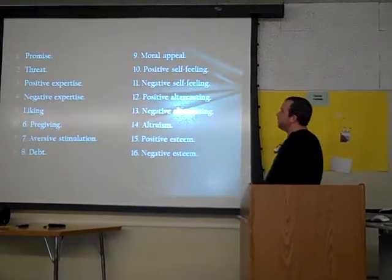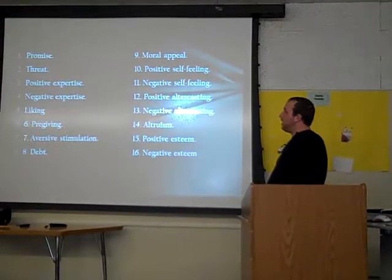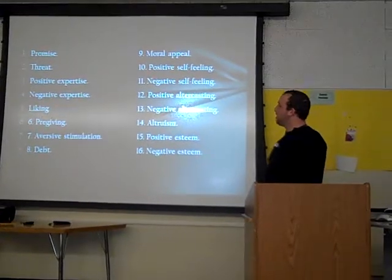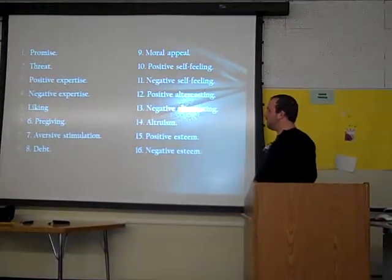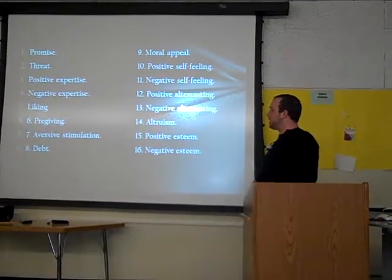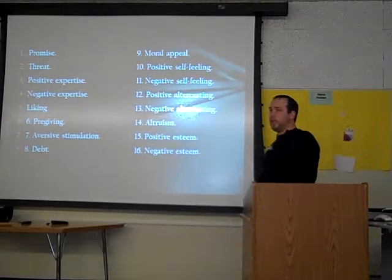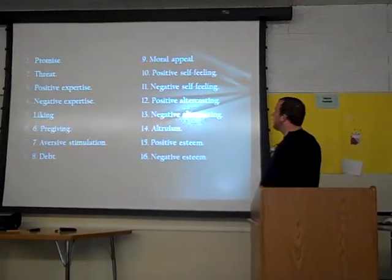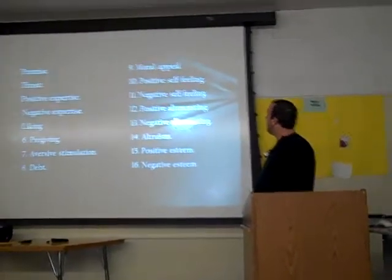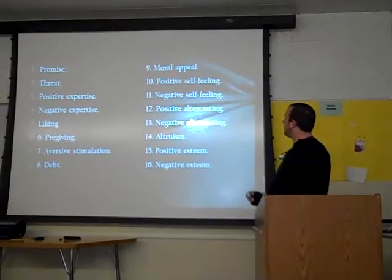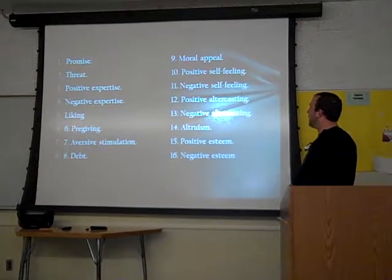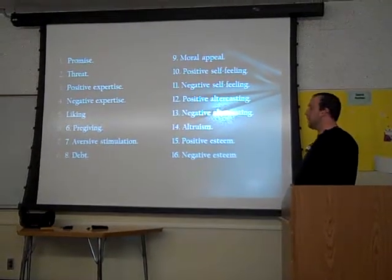One: promise. Two: threat. Three: positive expertise. Four: negative expertise. Five: liking. Six: pre-giving. Seven: aversive stimulation. Eight: debt. Nine: moral appeal. Ten: positive self-feeling. Eleven: negative self-feeling. Twelve: positive alter casting. And thirteen: negative alter casting.